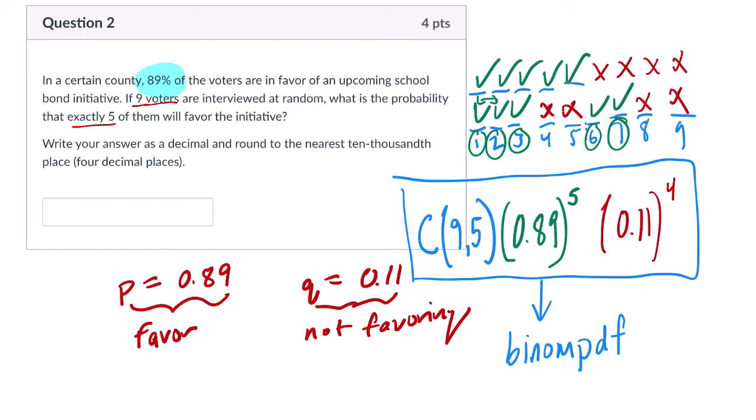Sorry about that. So here I can just tell you what I'm entering. I entered in second variables and then alpha A. That's the binomial PDF. Nine trials, nine people I'm picking. The P value, it's always success, 0.89, and it's happening five times.